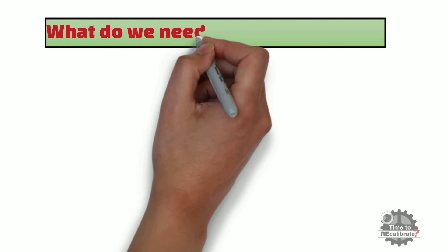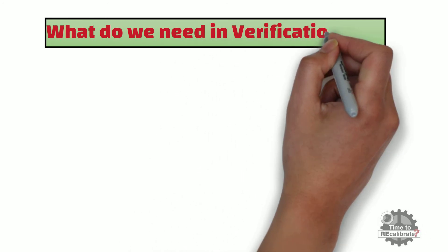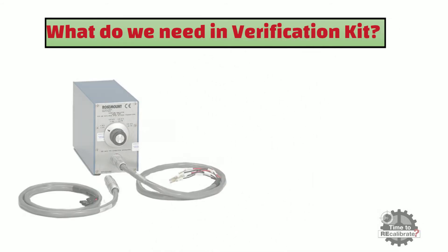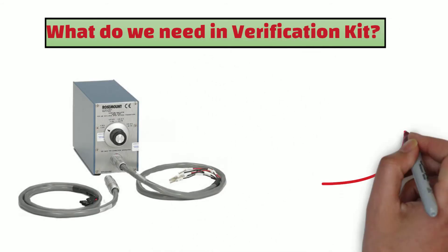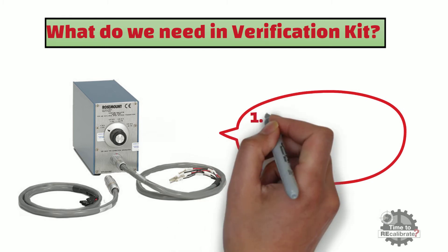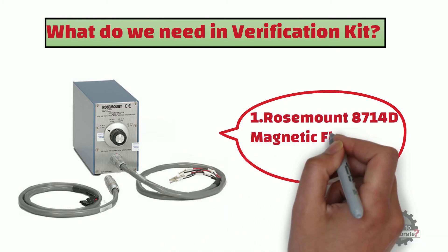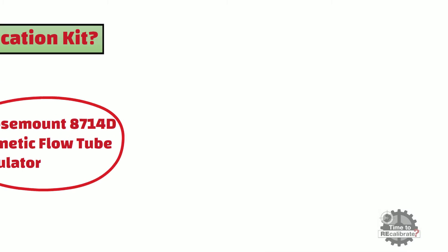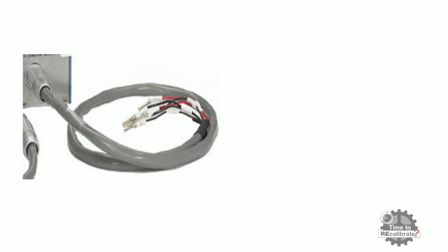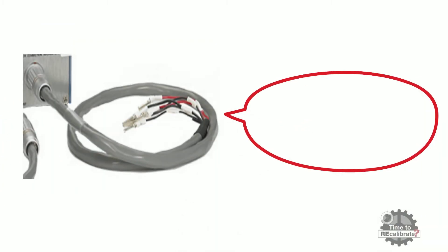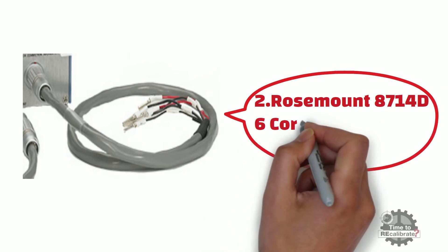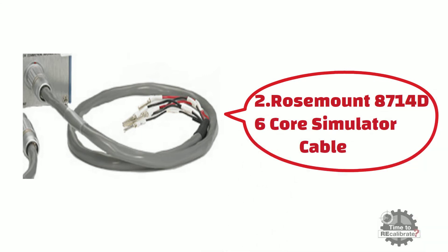First of all, what do we need in the verification kit in order to perform verification? Firstly, we need the Rosemount 8714D magnetic flow tube simulator. Secondly, we need the Rosemount 8714D six-core simulator cable. As you can see from the picture, one end has a metal connector and the other end has six cores.